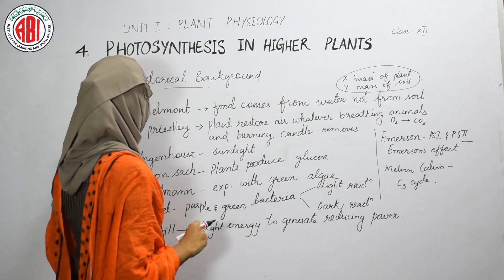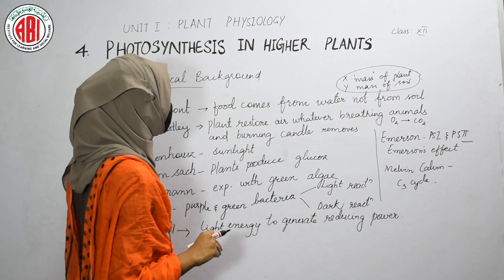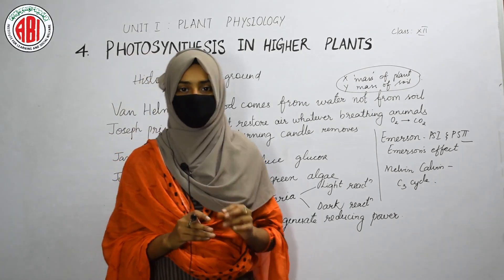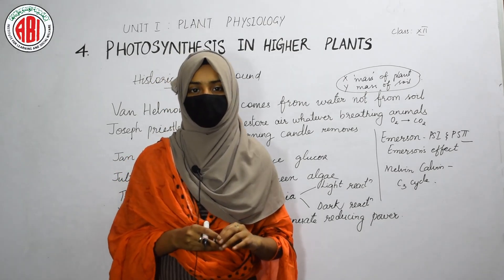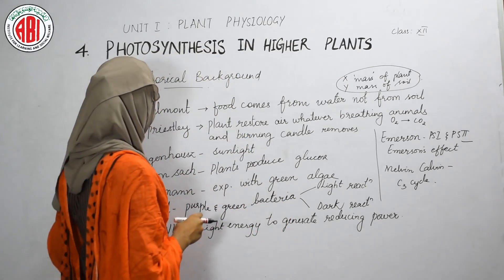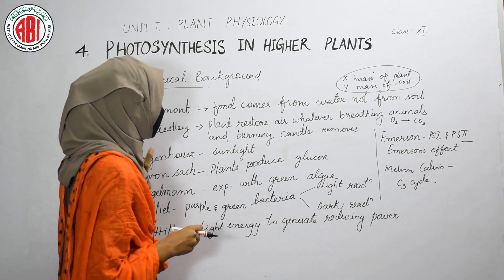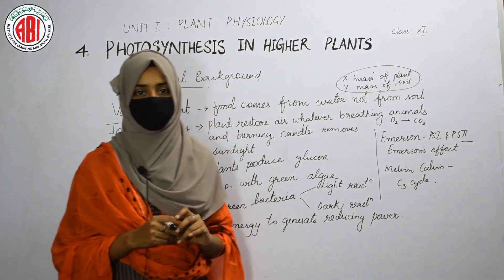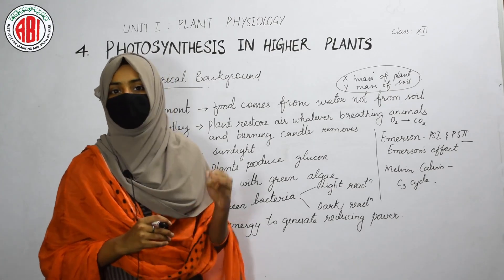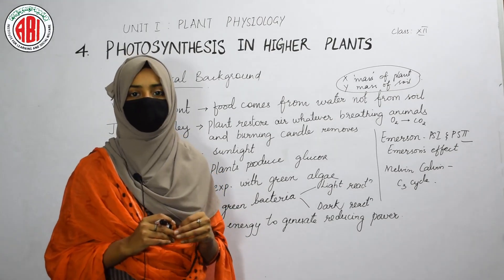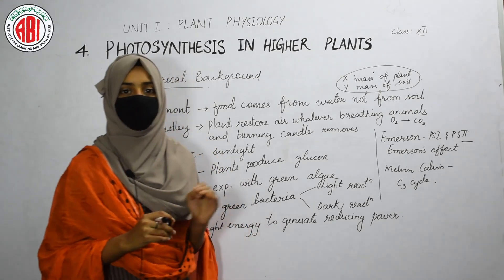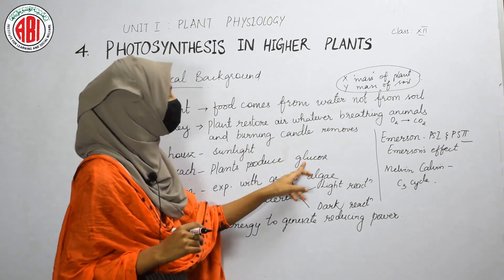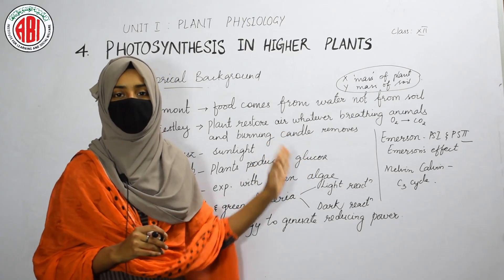Jan Ingenhousz described that sunlight is an essential factor in the process of photosynthesis. Julius von Sachs said that plants produce glucose during photosynthesis — plants use water, sunlight, and carbon dioxide to prepare food in the form of glucose, and this glucose can be converted into starch and stored in the plants.